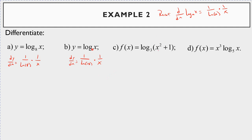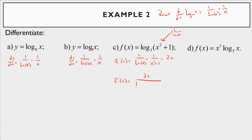For f(x) = log_3(x² + 1), notice there's something inside, so you need the chain rule. f′(x) = 1/ln(3) · 1/(x² + 1) · (derivative of the inside). The derivative of x² + 1 is 2x. So f′(x) = 2x / (ln(3)·(x² + 1)).